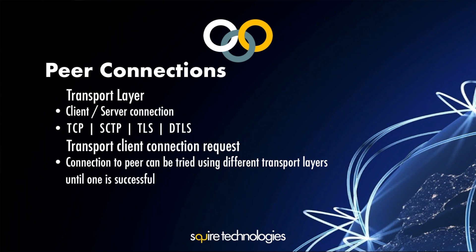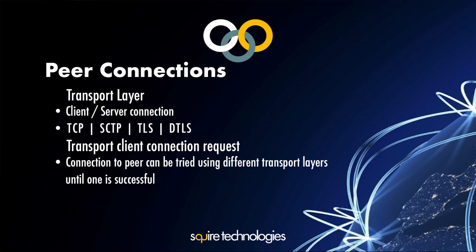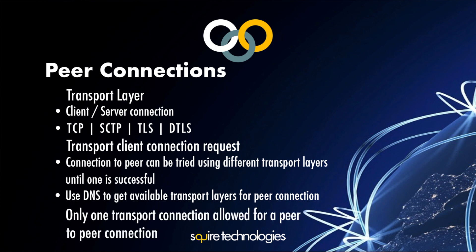The winning connection is used, but if you try to set up a second connection when one is already established — say an SCTP connection — it will be rejected, because you can't create another connection when one already exists. You can use DNS to discover available transport layers for peer connections, obtaining IP addresses, ports, and listening ports. You can only have one transport connection per peer-to-peer connection.